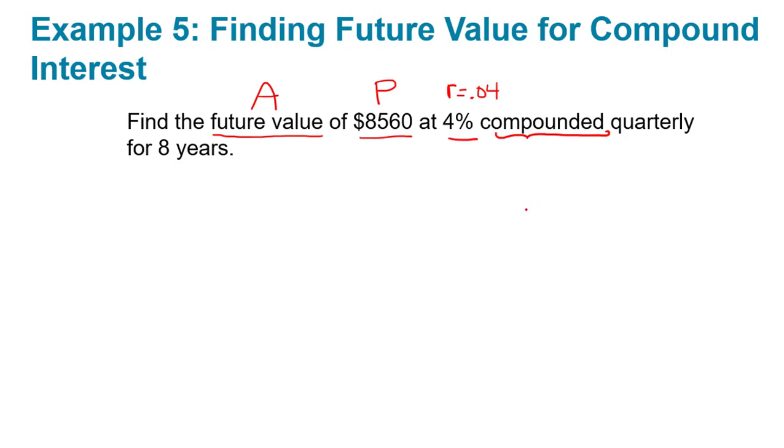Since it's compounded, they have to give us the compounding period, which is quarterly, four times a year. So n, the new variable that we need for compound interest, would be 4 in this case. And this is going to go on for 8 years. So t, our time period in years, is 8.